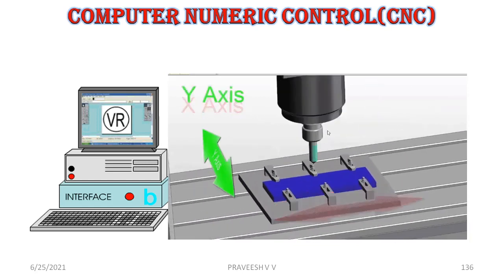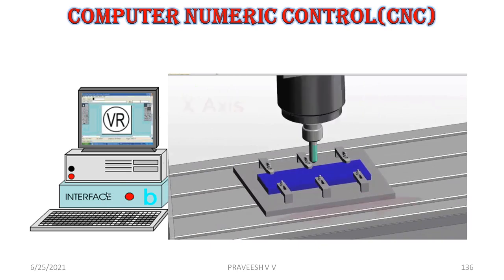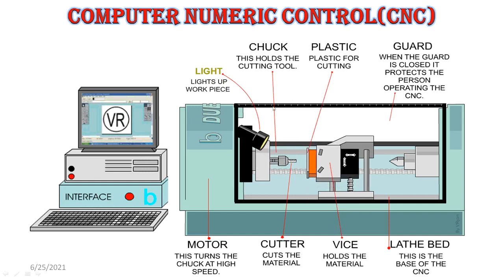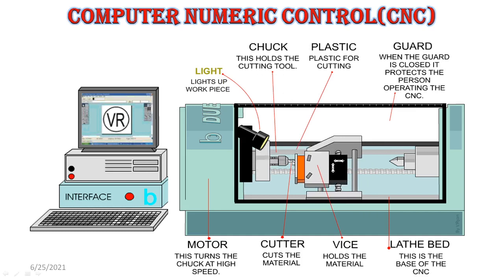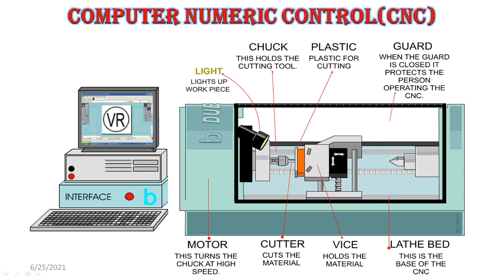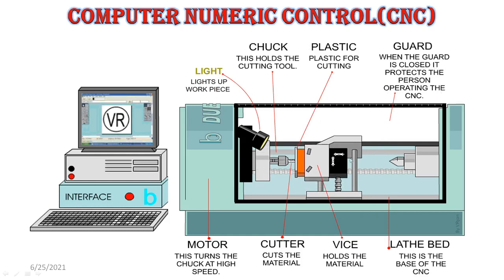The machine supports X-axis movement, Z-axis movement, and so on. This holds the cutting tool — this is the cutting tool. This is a vice which holds the material which is going to be cut or polished. Then you have the guard; when the guard is closed, it protects the person operating the CNC.